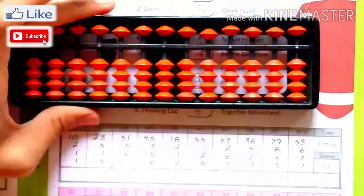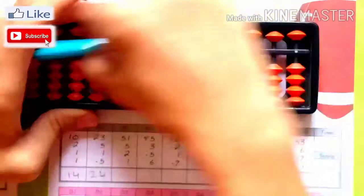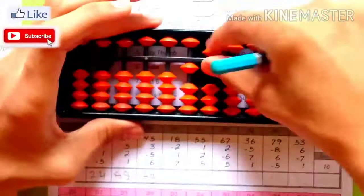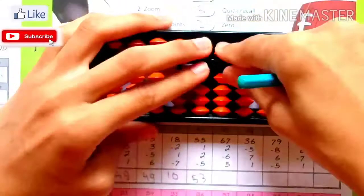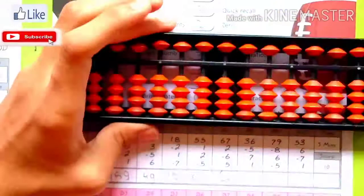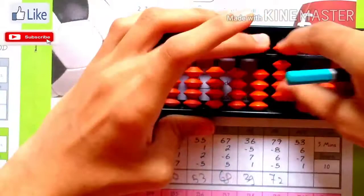10, 2, 1, 1, 14, 23, 5, 1, minus 5, 24, 51, 5, 2, 1, 59, 45, 3, minus 5, plus 6, 49, 18, minus 2, plus 1, minus 7, 10, 55, 1, 2, minus 5, 53, 67, 2, minus 6, plus 5, 68, 36, minus 5, plus 7, plus 1, 39, 79, minus 8, plus 6, minus 5, 72, 53, plus 6, minus 7, plus 1, 53. Let's see: 56 seconds.